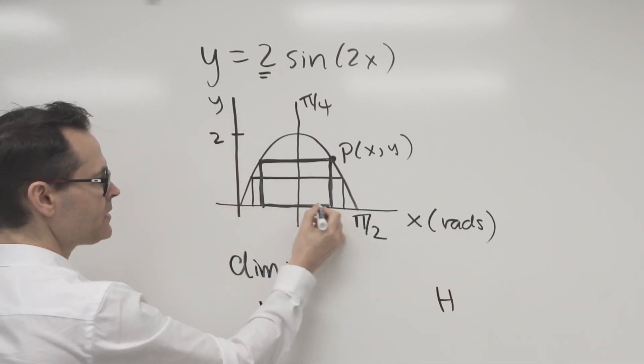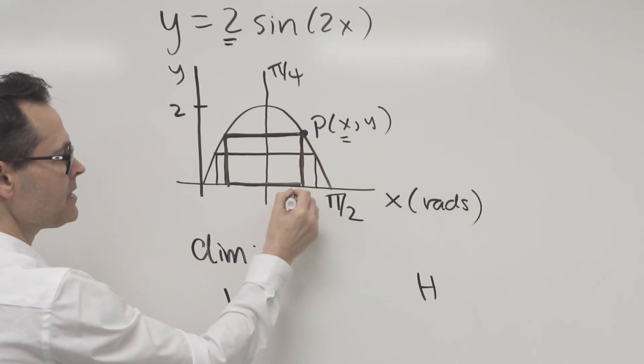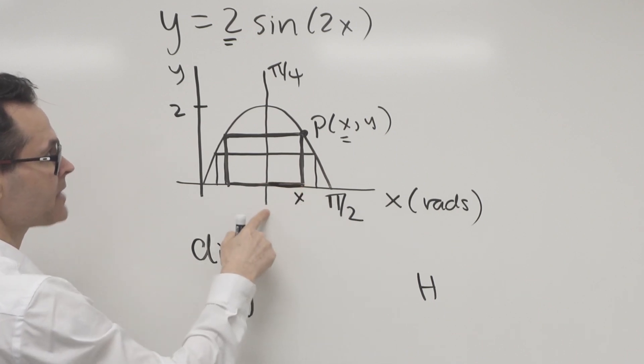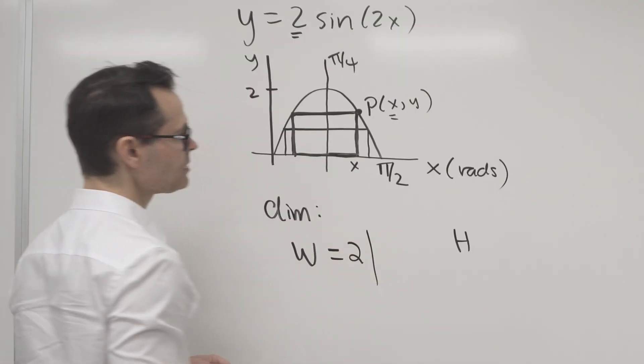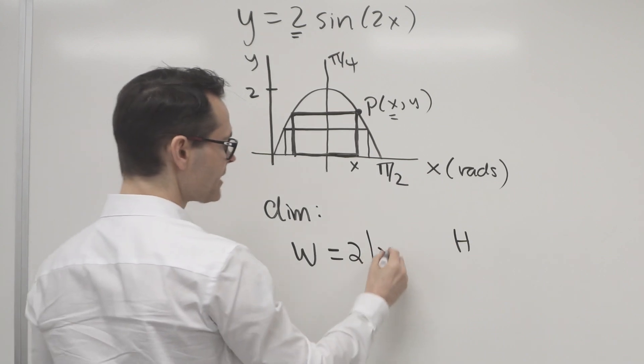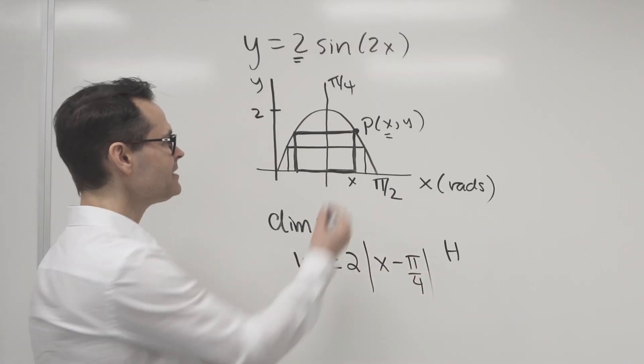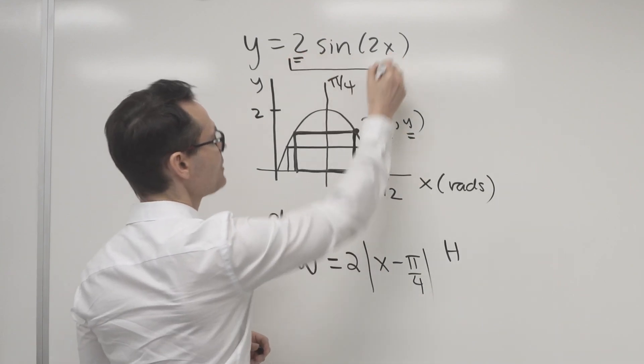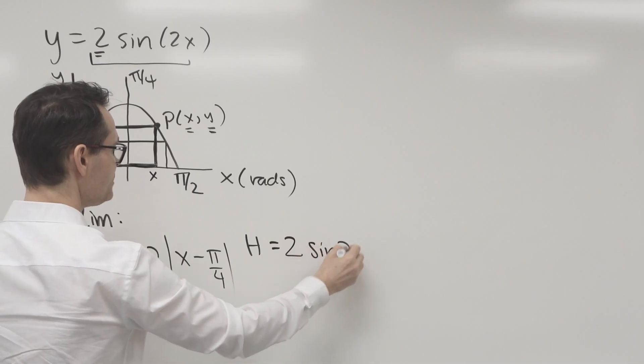So let's think about the width for a second. I know that if I choose x as this location here, if I double the distance between x and pi over four, I'll get this width. So the width could be written as two times the distance between x and pi over four. And then the height is given by your y-coordinate, which is two sine two x.